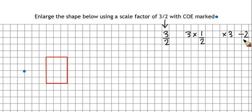So to work out where my new points are going, I'm going to be multiplying by 3 and then dividing by 2. So same process again, there's A, B, C, and D.